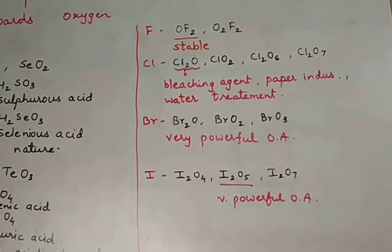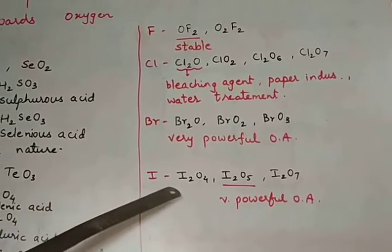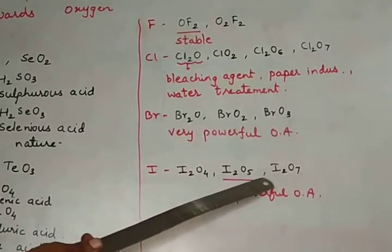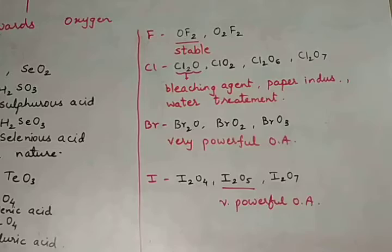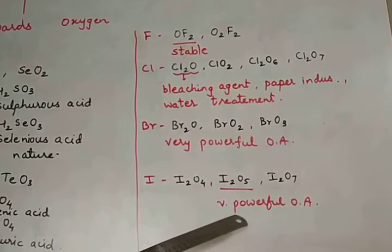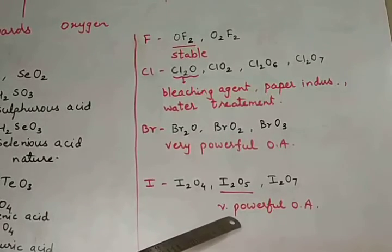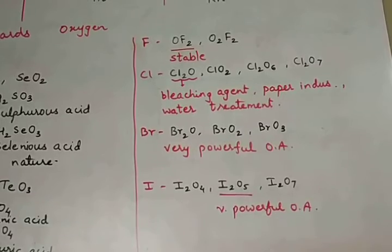And when we come to iodine, iodine can form oxides I2O4, I2O5, and I2O7 type. These are the three types of oxides formed. Out of this, I2O5 is an oxide which is very powerful oxidizing agent.